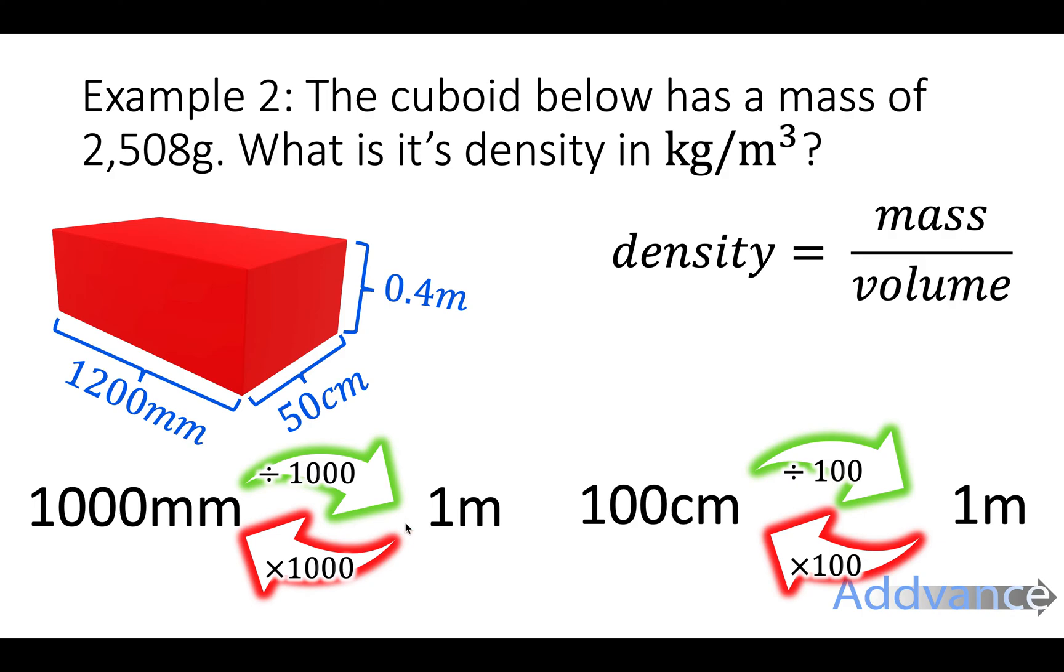To go from millimeters to meters, you divide by 1,000. So you do 1,200 divided by 1,000 will be 1.2 meters. And 50 centimeters, well, to go from centimeters to meters, you divide by 100.